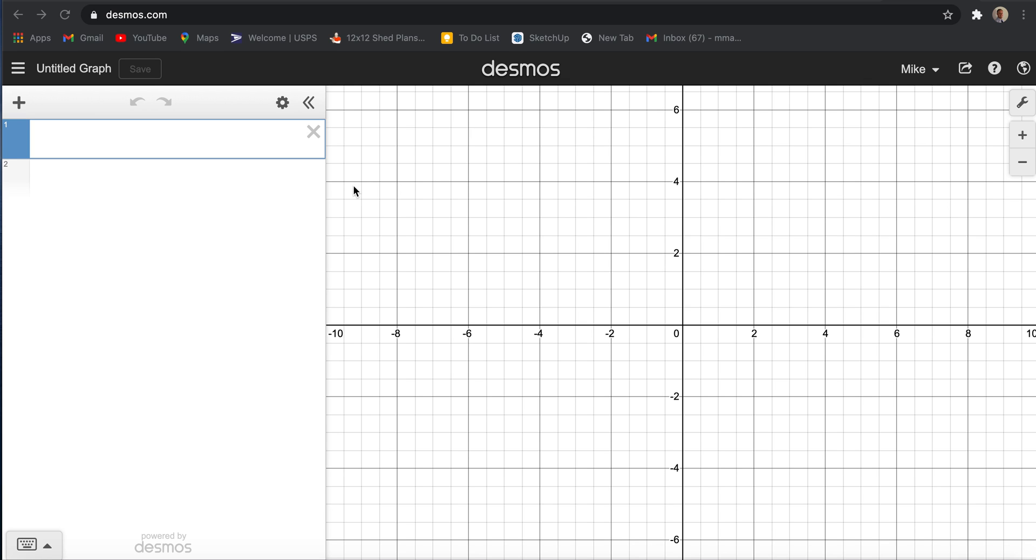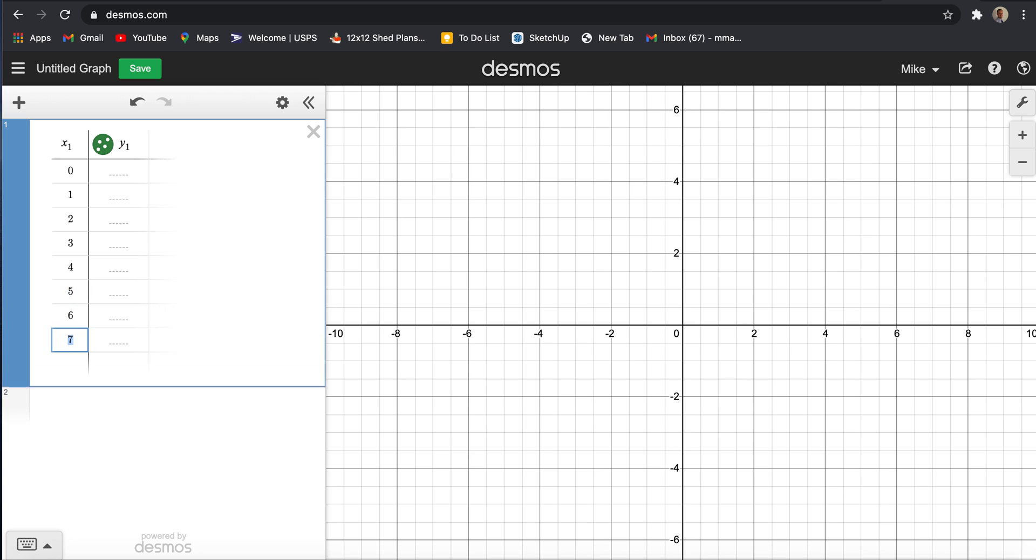I'm going to create a table and then fill in some values of data and show how to create a line of best fit for that. First, I want to click the addition sign in the upper left corner, then add a table in and add some X and Y values. Let's go up to 10 and then some random points here.